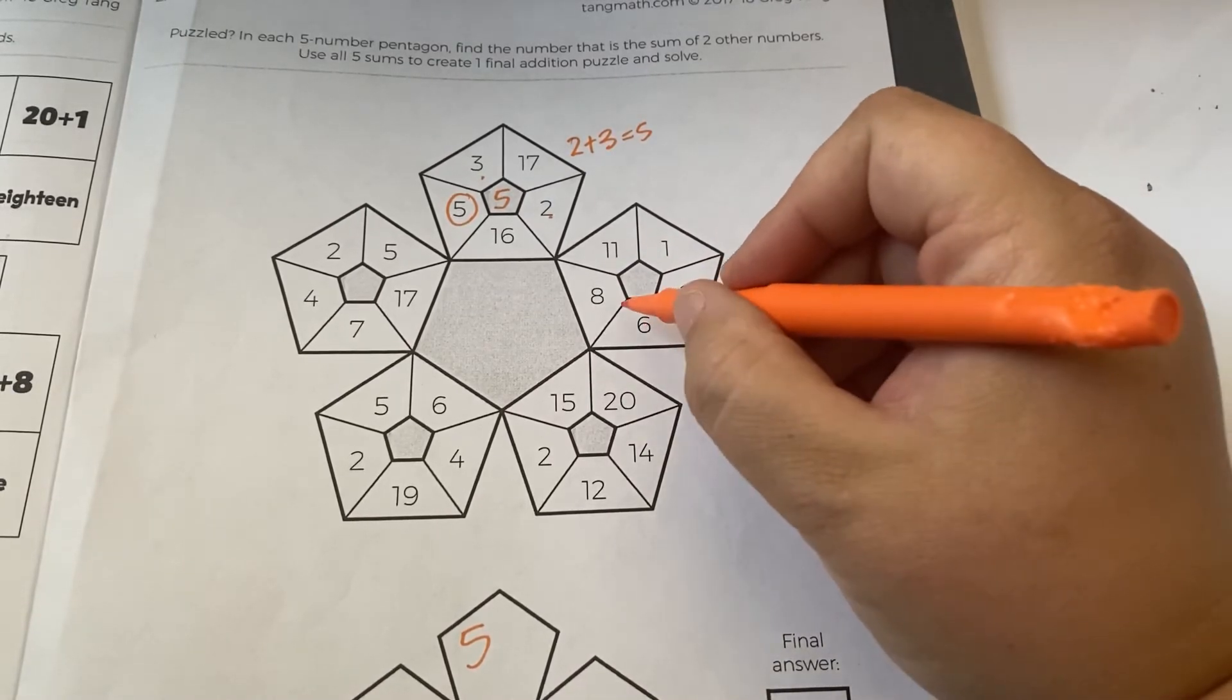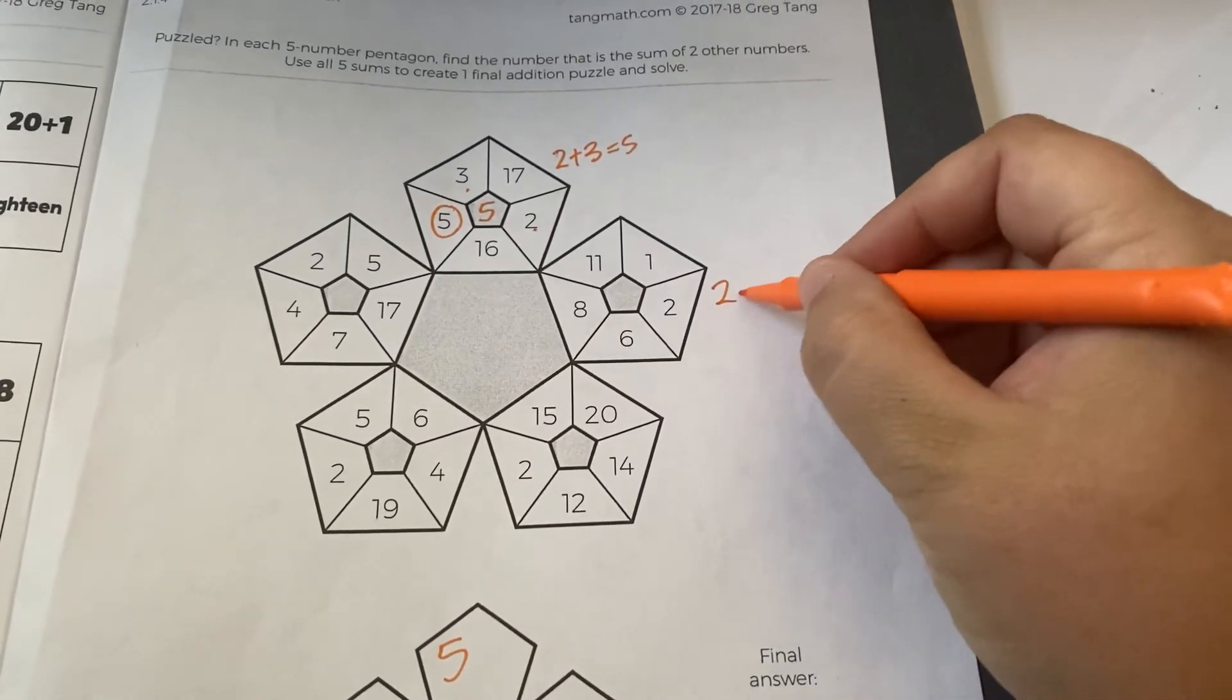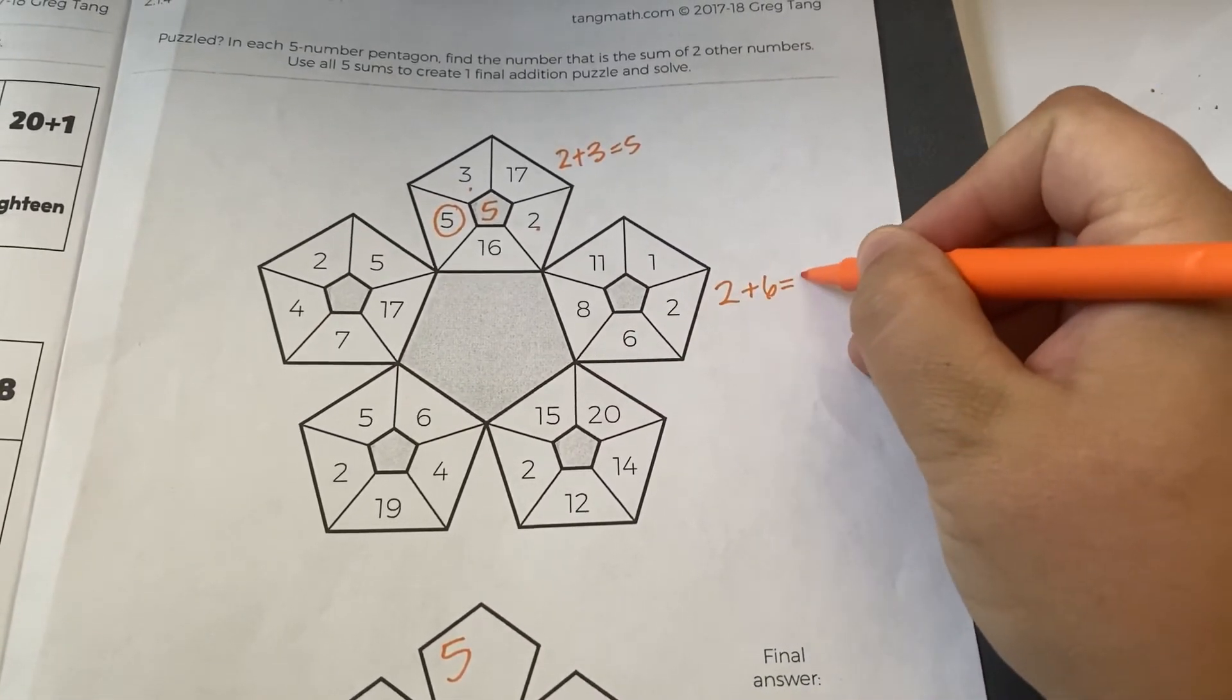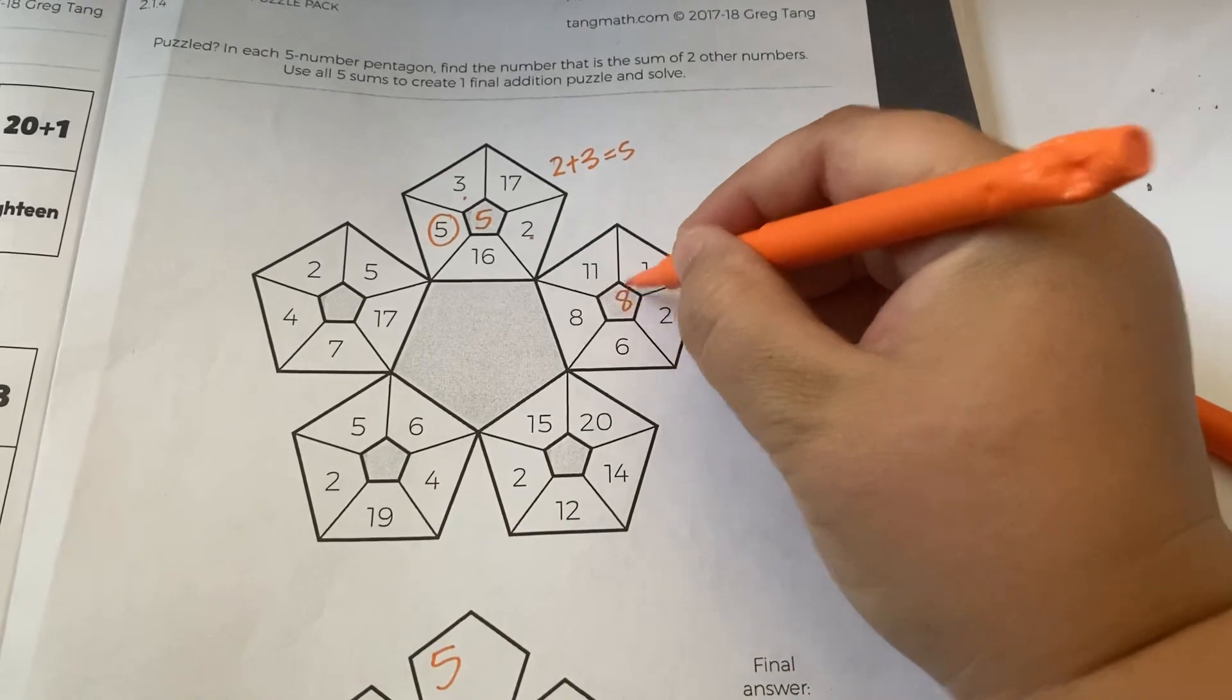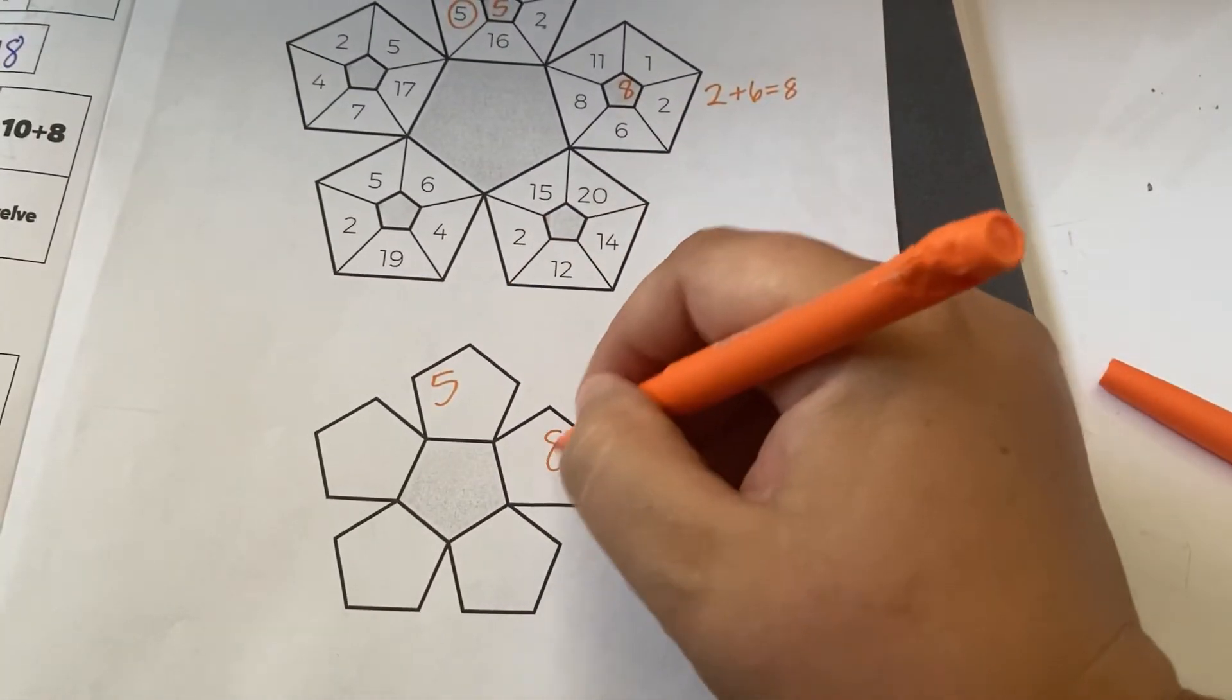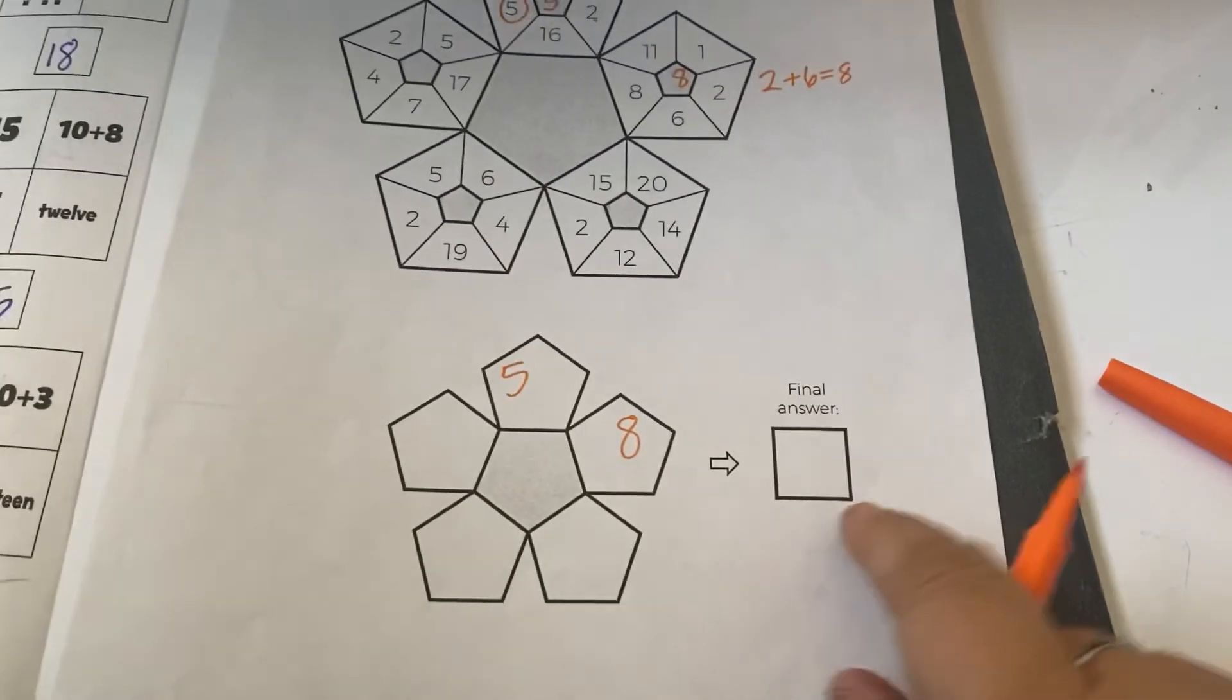Two and six make eight, oh there it is. Two plus six equals eight. So I'm going to put eight here and I'm going to keep doing that and eventually I will find my final answer.